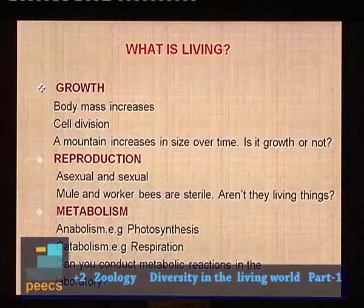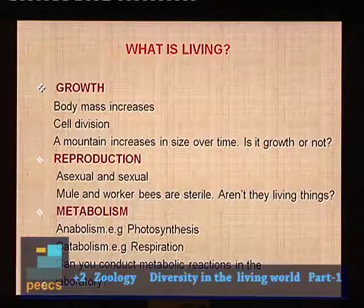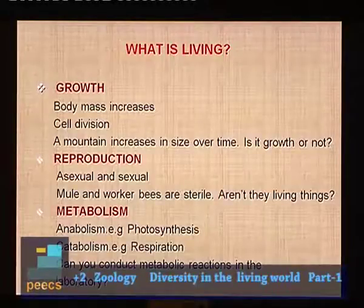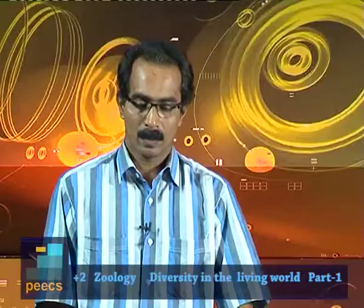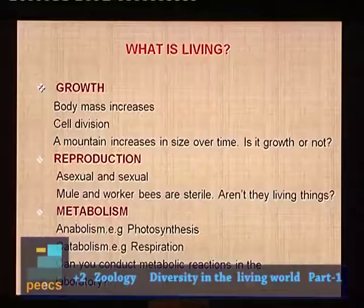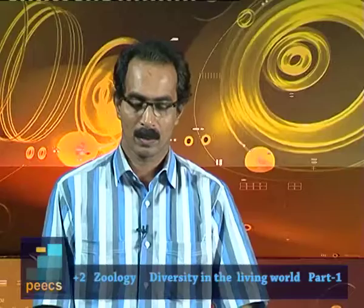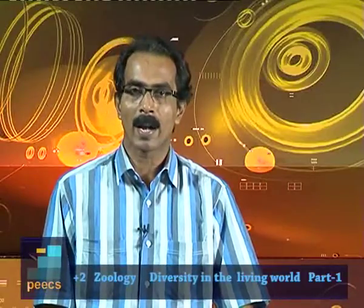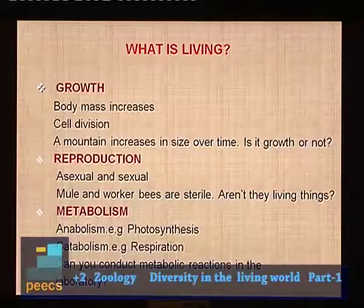The second characteristic feature of living things is reproduction. There are two types: asexual and sexual. Asexual means division of the body, like binary fission in amoeba or budding in hydra. Sexual reproduction involves sex cells like gametes. All organisms reproduce, but mule — a hybrid of donkey and horse — cannot reproduce; it is a sterile organism. Worker bees are also unable to reproduce, yet they are still living things.